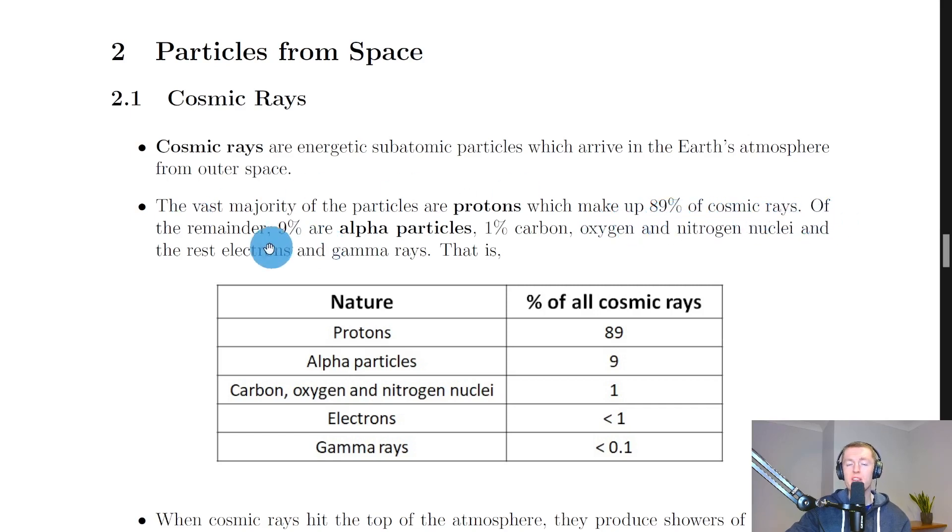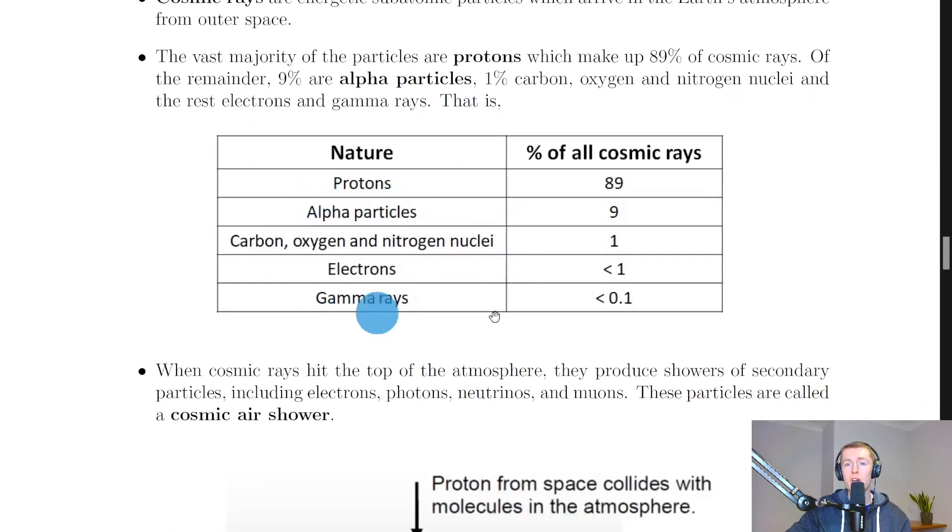Of the remainder, 9% are alpha particles, 1% carbon, oxygen and nitrogen nuclei, and the rest electrons and gamma rays. So if we summarize this in a table, it looks something like this. You've got the types of particles here.